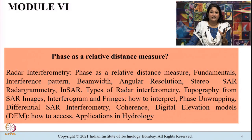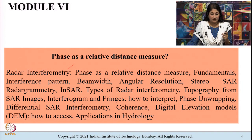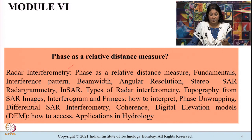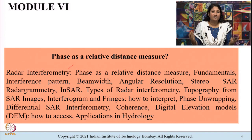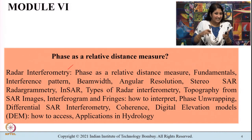The tagline of Module 6 is: can phase be used as a relative distance measure? Through this module we will be learning what is radar interferometry — the fundamentals, the interference pattern, and terminologies like beam width, angular resolution, stereo SAR radar geometry, and whether we can estimate topography from synthetic aperture radar images. We are asking whether a two-dimensional SAR image can be used to represent a three-dimensional surface of terrain topography.